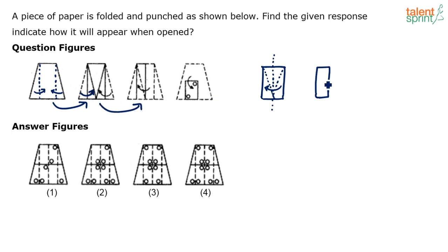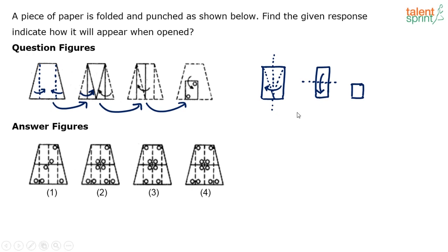In the third figure to fourth figure transition, the top half of this rectangle is folded onto the bottom half. Finally, we have arrived at this small piece of paper which has got multiple folds in it, and two holes have been punched - one hole on the top right and one hole at the bottom left.